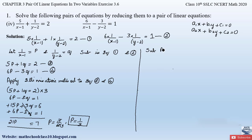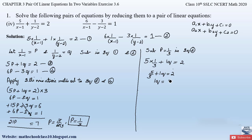Now substitute p = 1/3 in equation 3. Equation 3 gives 5 × (1/3) + q = 2, so 5/3 + q = 2. Sending 5/3 to the right-hand side: q = 2 − 5/3. Taking LCM of 3: q = (6 − 5)/3 = 1/3. So we get q = 1/3.